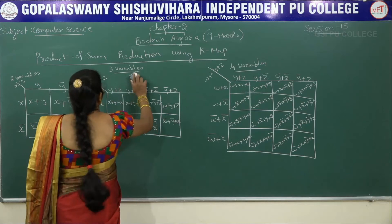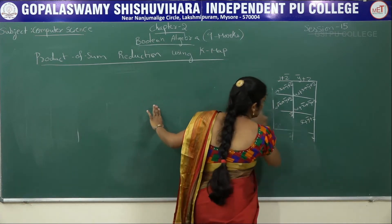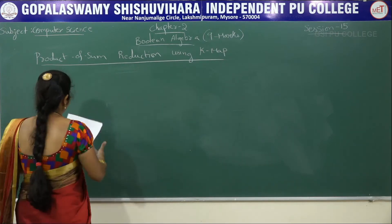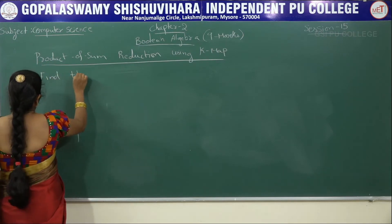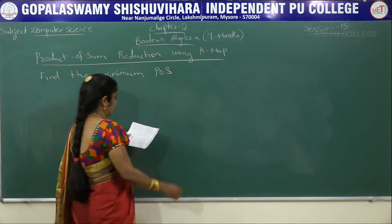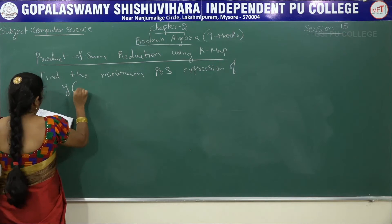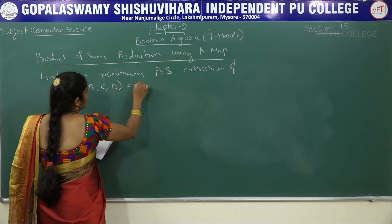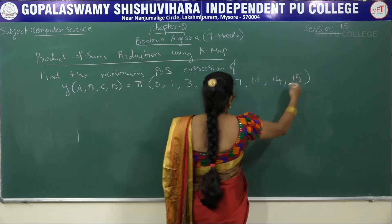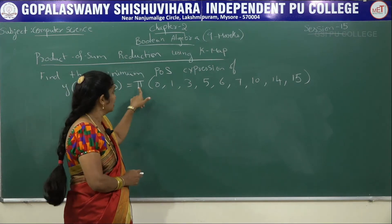Now we will explain a few K-map problems using maxterm. In the previous class, we explained how to solve K-map using minterm. Now maxterm. Consider the question: Find the minimum POS (Product of Sum) expression of Y(A, B, C, D) = π(0, 1, 3, 5, 6, 7, 10, 14, 15). Note the difference between minterm and maxterm — in minterm we write sigma, whereas in maxterm we write pi.